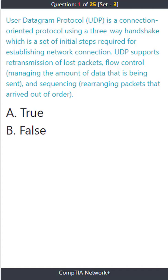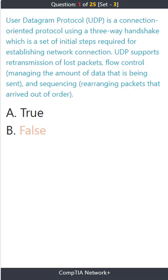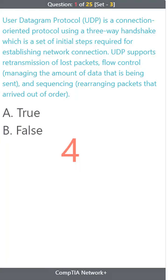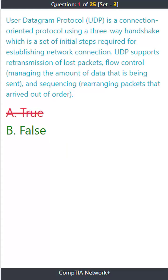Question 1. User Datagram Protocol (UDP) is a connection-oriented protocol using a three-way handshake, which is a set of initial steps required for establishing a network connection. UDP supports retransmission of lost packets, flow control, managing the amount of data being sent, and sequencing, rearranging packets that arrived out of order. A. True. B. False. The correct answer is B. False.